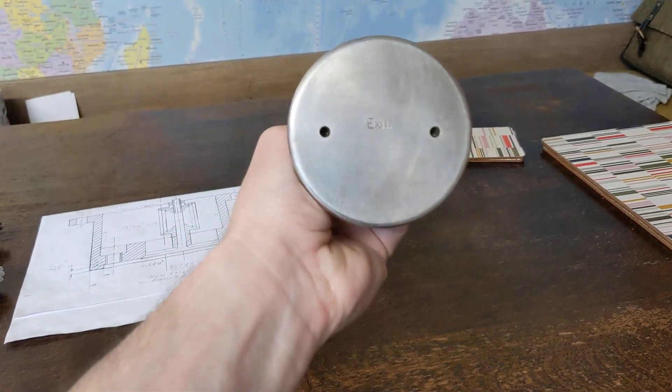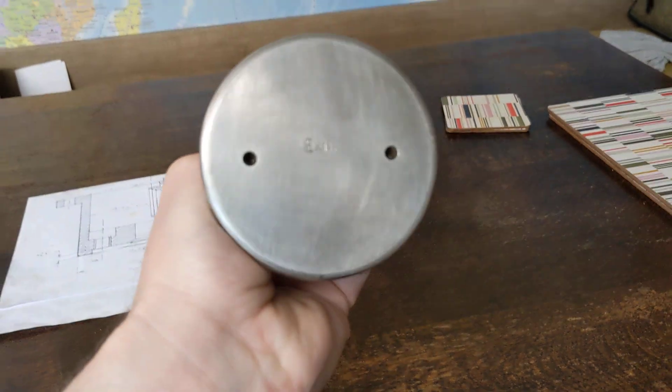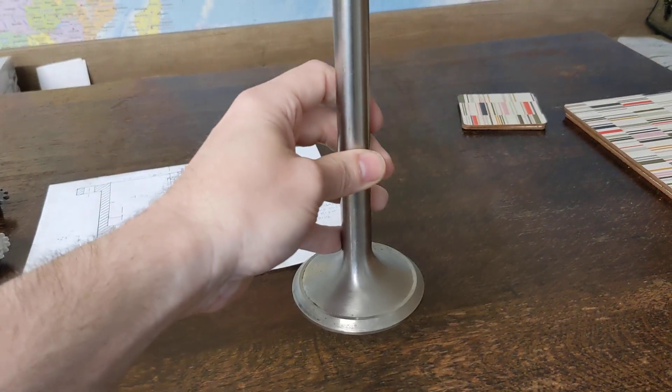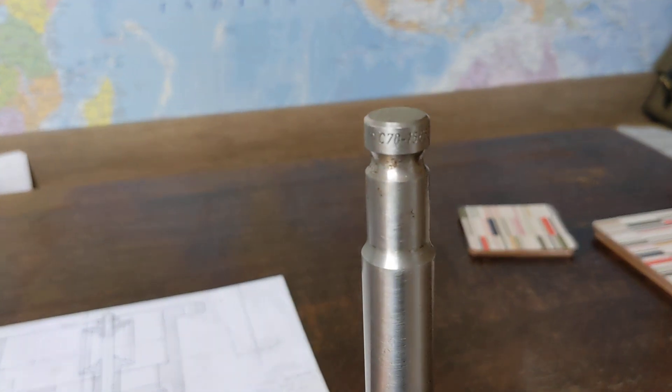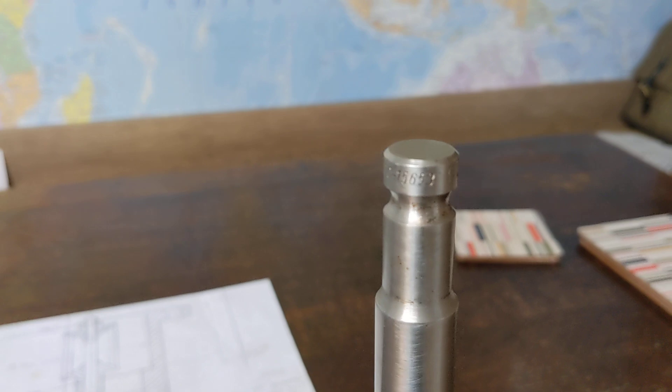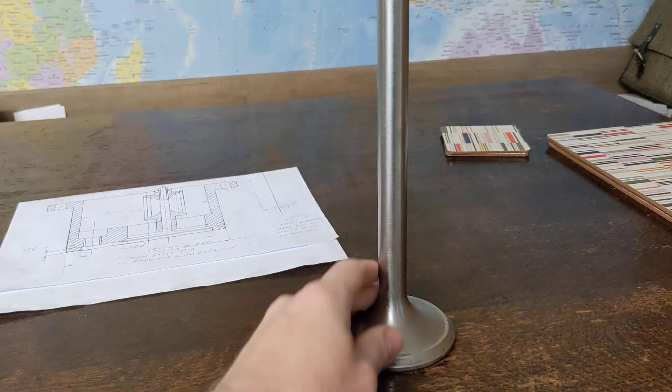We think it's from a compressor rather than an engine so it might not be hardened. It says EXT on that so we think that's an exhaust valve and there's a few numbers around the top there but I have no idea what this is from. It came from near a dockyard and we think it might be from a compressor.